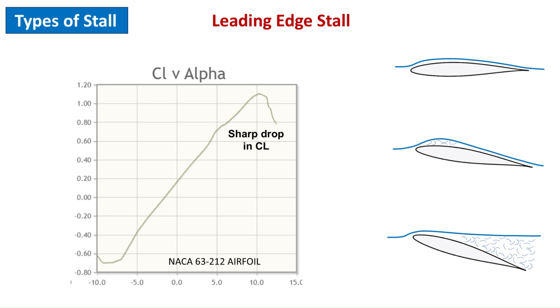This results in a sharp and substantial loss of lift. The abrupt loss of lift can be seen in the lift versus angle of attack plot. A leading edge stall is generally unfavorable due to its abrupt nature. The pilot receives little to no warning, and the stall occurs suddenly and sharply.